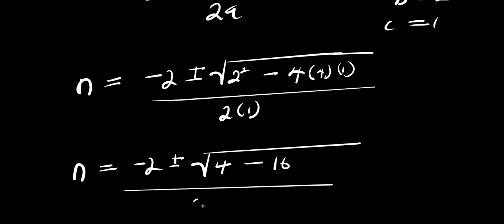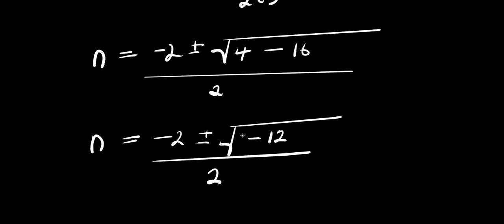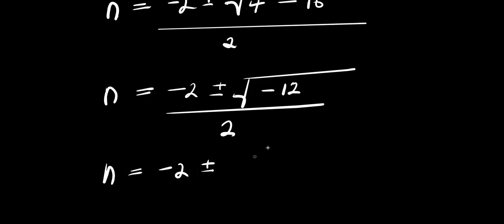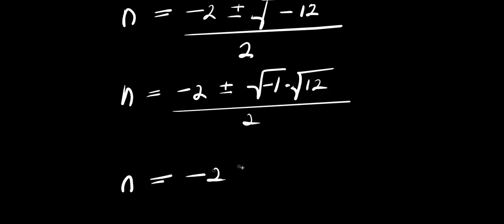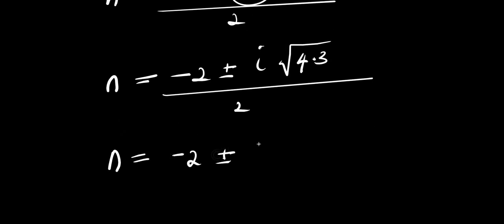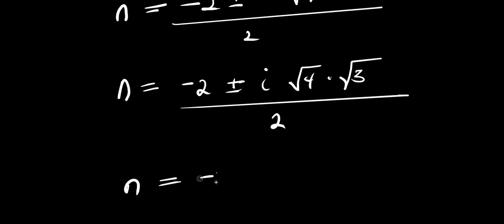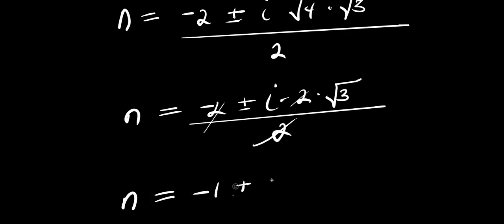So n equals negative 2 plus or minus square root of 4 minus 16, which is negative 12, divided by 2. Since we have a negative under the radical, square root of negative 12 equals i times square root of 12, and 12 equals 4 times 3, so that becomes i times 2 root 3. Dividing by 2, the 2s cancel, giving n equals negative 1 plus or minus i root 3.